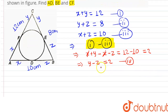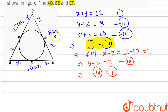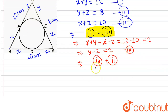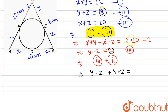Now we add equation four and equation two. Equation four is Y minus Z, and equation two is Y plus Z, giving us 2 plus 8 equals 10. The Z terms cancel out, so 2Y equals 10.